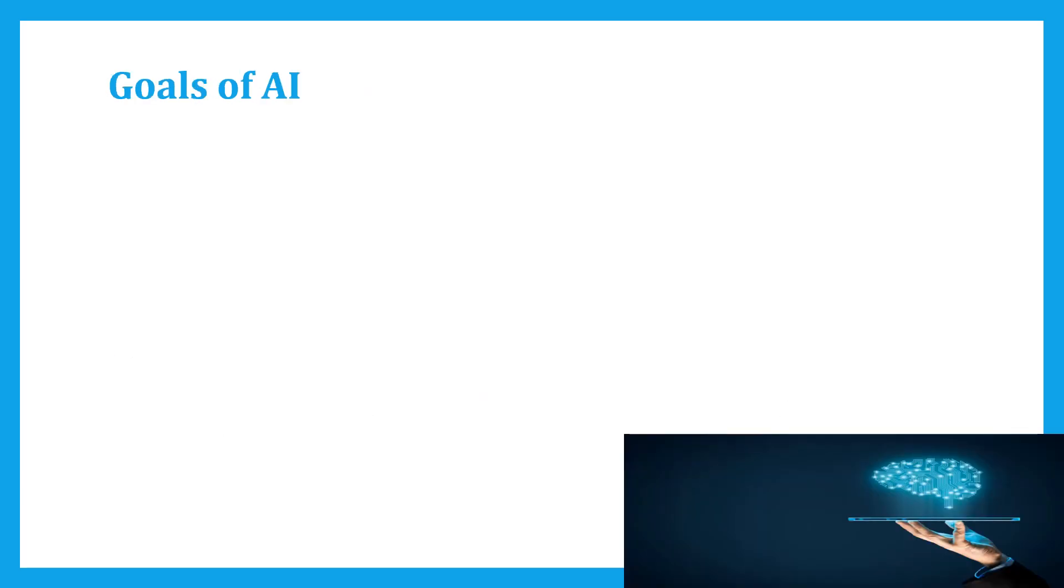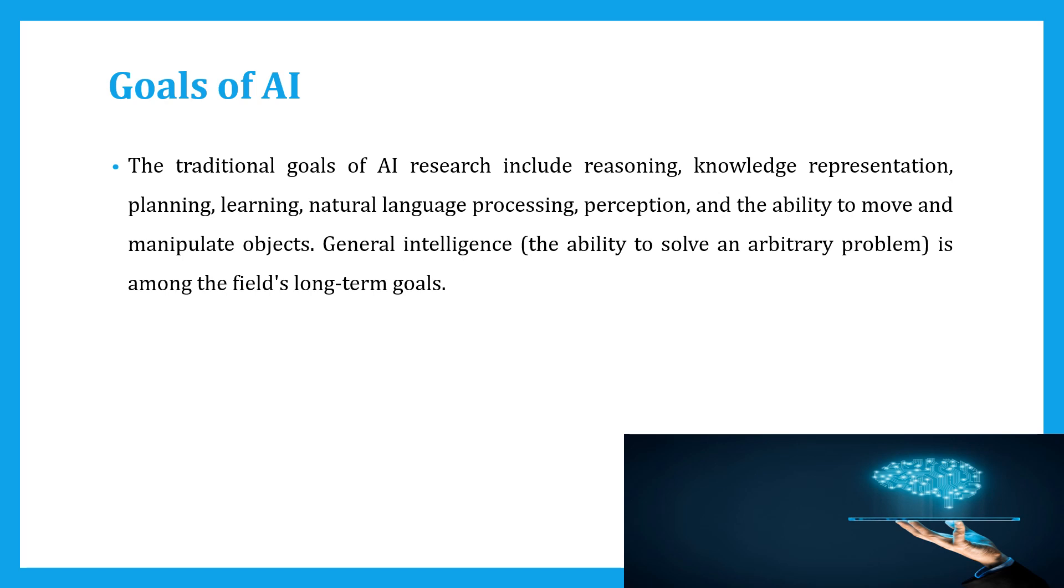What are the goals of AI? The traditional goals of AI research include reasoning, knowledge representation, planning, learning, natural language processing, perception, and the ability to move and manipulate objects.